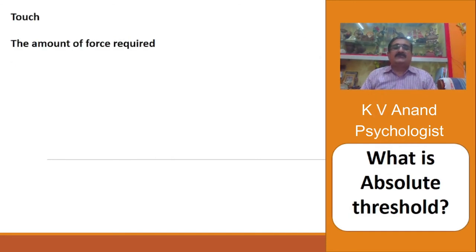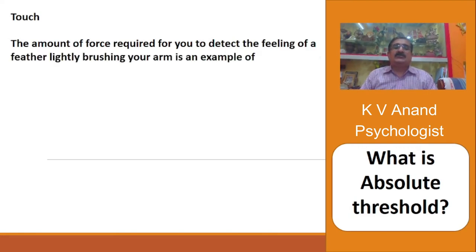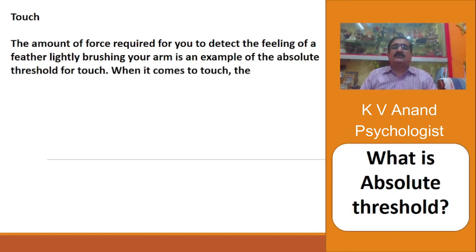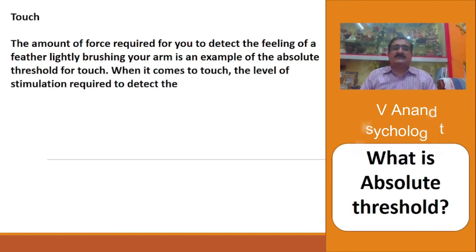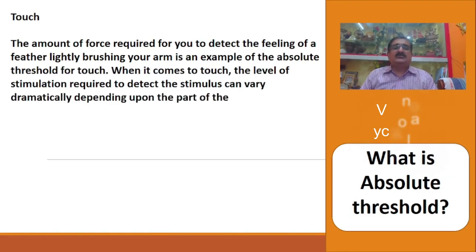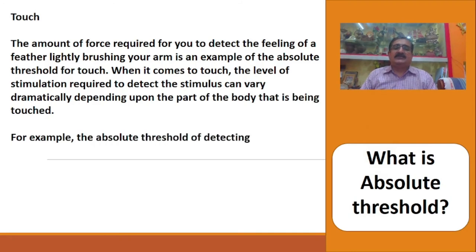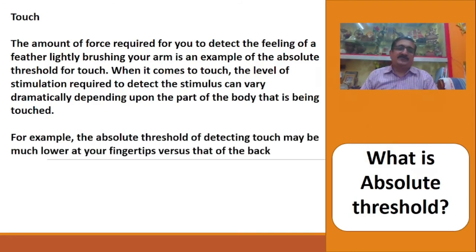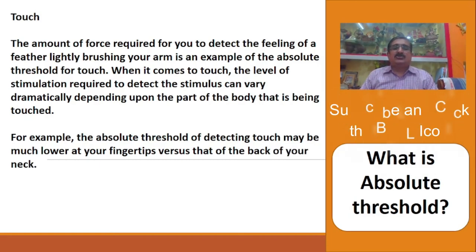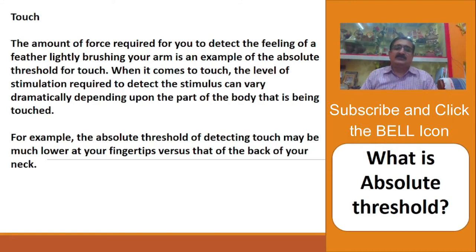In the case of touch, the amount of force required to detect the feeling of a feather lightly brushing your arm is an example of absolute threshold for touch. The level of stimulation required to detect the stimulus can vary dramatically depending upon the part of the body being touched. For example, the absolute threshold for detecting touch may be much lower at your fingertips versus the back of your neck.